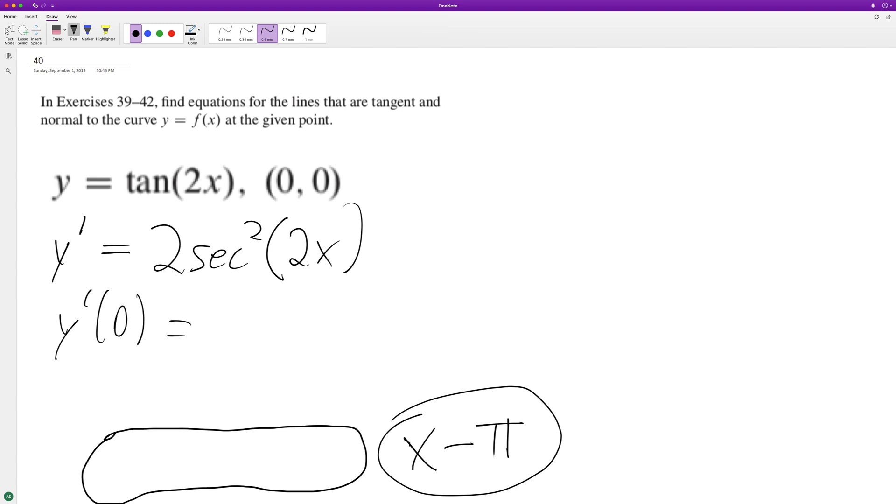2 secant squared at zero. So that's equal to 2 times sec²(0), which is 2 times 1, equals 2. So the tangent is going to be y...